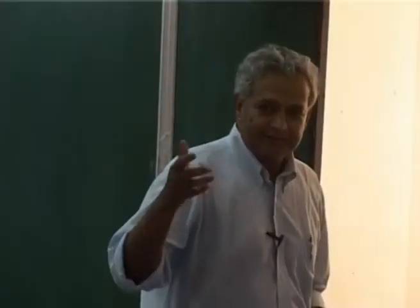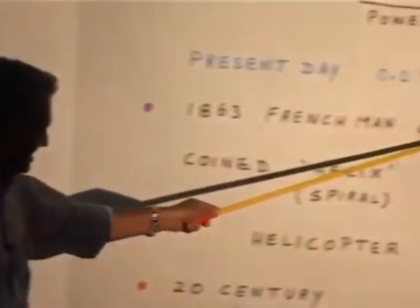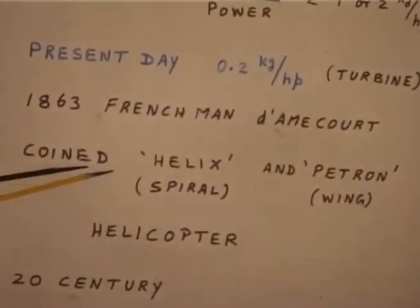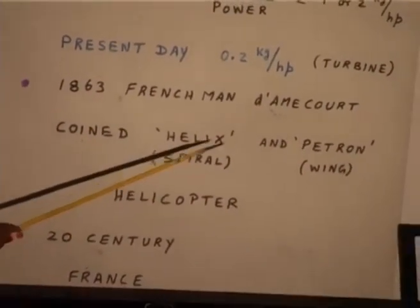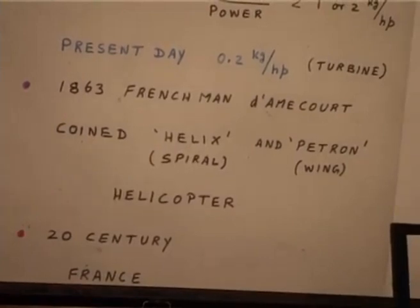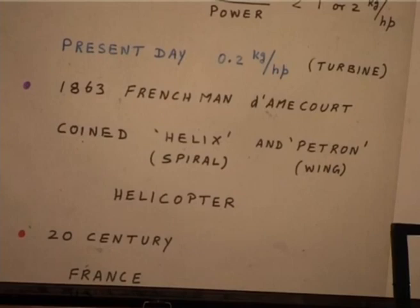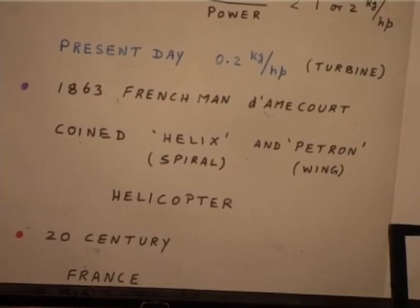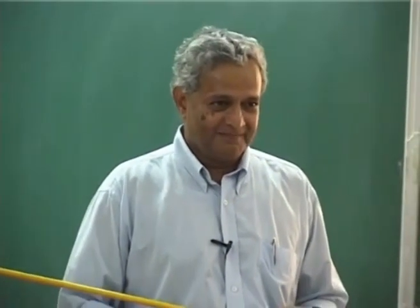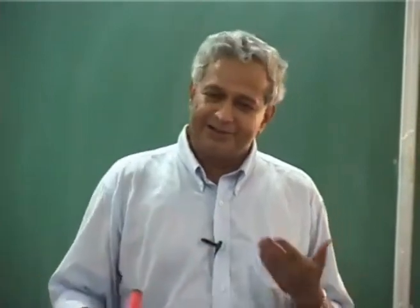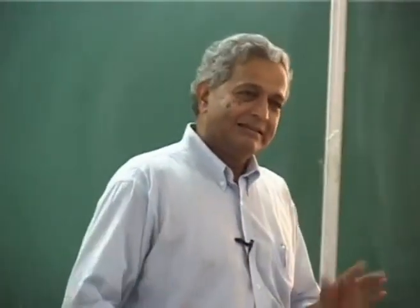How did the word 'helicopter' come about? It was coined in 1863 by the Frenchman Nadar. It comes from 'helix' and 'pteron' — meaning the spiral wing. It then became the general word for this class of rotating-wing vehicle. Now people also call it rotary-wing vehicles — these two terms are used commonly in publications.